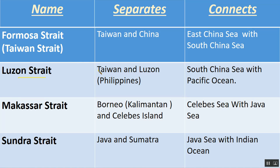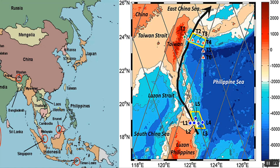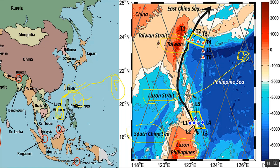The Luzon Strait separates Taiwan from Luzon of the Philippines, and connects the South China Sea with the Pacific Ocean. On the map, Taiwan is here, Luzon of the Philippines is here, and the strait between them connects the South China Sea to the Pacific Ocean.